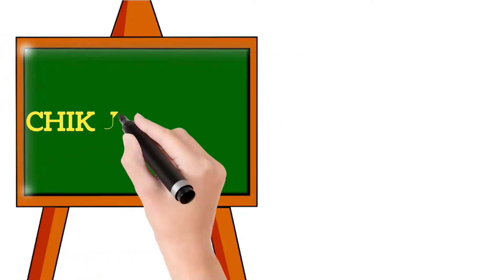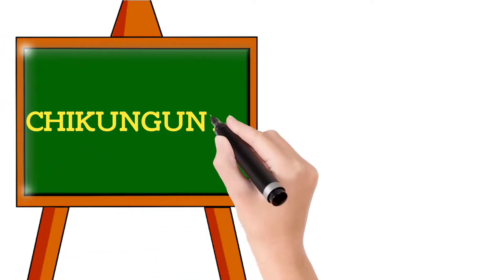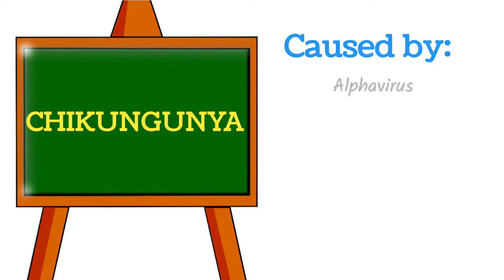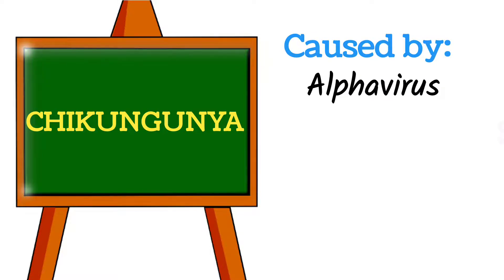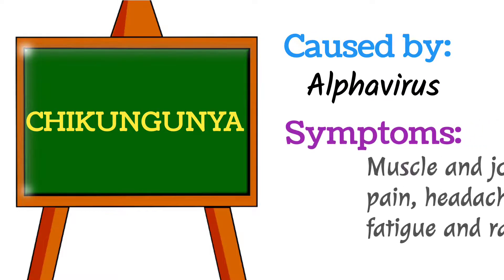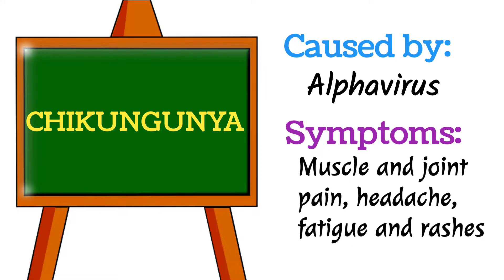Next is Chikungunya. This disease is caused by Alphavirus and the symptoms include muscle pain, joint pain, headache, rash on the skin, and weakness in the body.